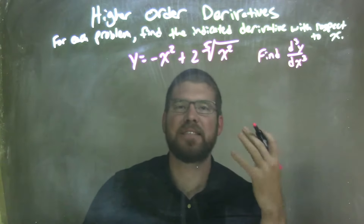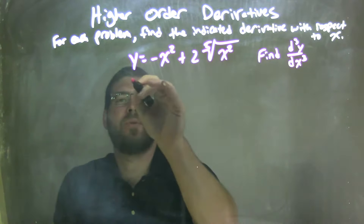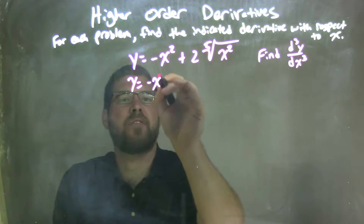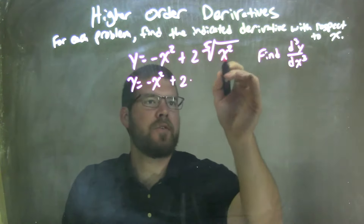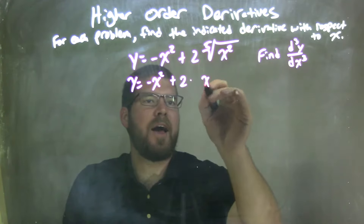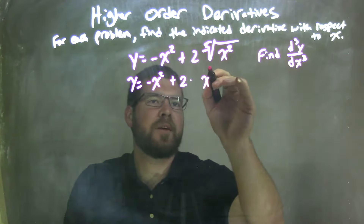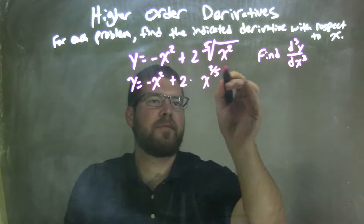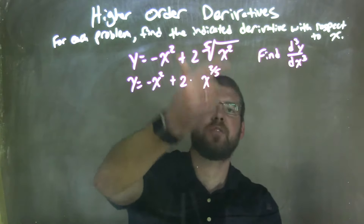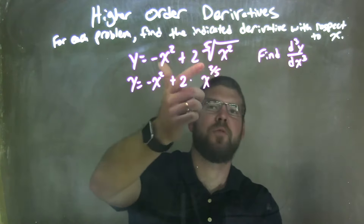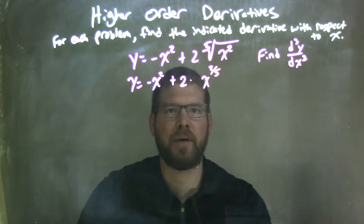I'm going to make this into just a fractional exponent. So we have y equals negative x squared plus 2 times x squared, and the fifth root of that is the same thing as the two-fifths power — because the fifth root is the same as the one-fifth power, and x squared is just squared. So if we combine them together, it's x to the two-fifths power.